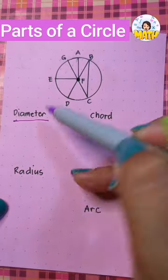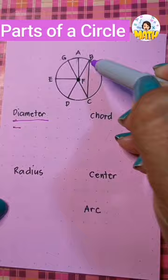Parts of a circle. Let's begin with diameter. Diameter is a chord that passes through the center. We can name it as line segment BD or line segment DB. The letters can be interchanged.